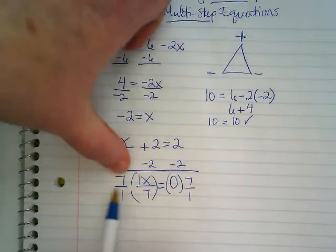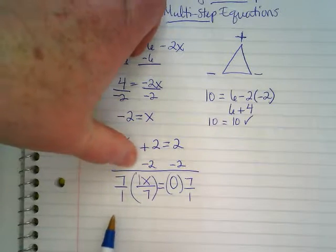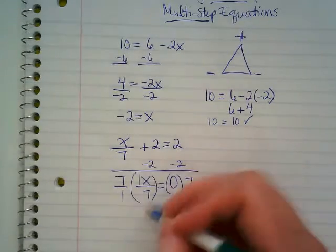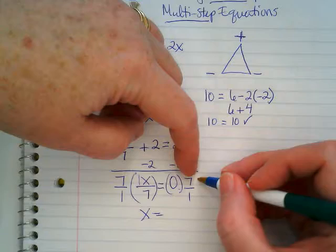On the left side, 7 times 1 over 1 times 7 is going to be 7 over 7, which is an invisible 1, leaving us with x. 0 times 7 is zero.